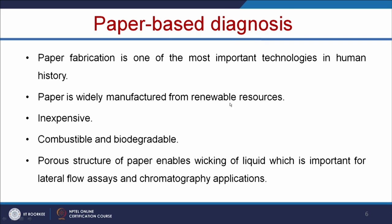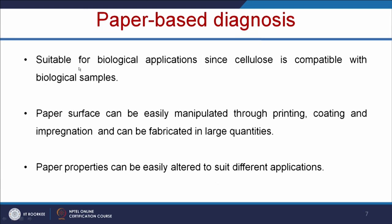Paper fabrication is one of the most important technologies in human history because paper is widely manufactured from renewable sources. It is inexpensive, combustible, and biodegradable. For example, if you make a paper-based diagnostic kit for detecting pathogens, after detection you can discard the kit by simple incineration. The porous structure of paper enables wicking of liquid, which is important for lateral flow assays and chromatographic applications. Paper is also suitable for biological applications because cellulose is compatible with biological samples, and the paper surface can be easily manipulated through printing, coating, and impregnation and fabricated in large quantities.